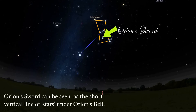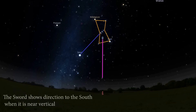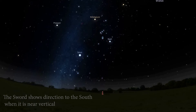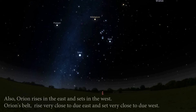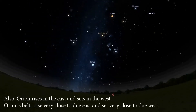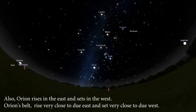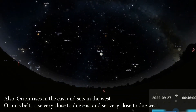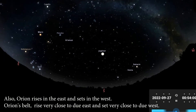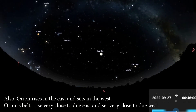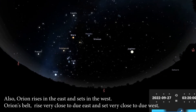Orion's Sword can be seen as the short vertical line of stars under Orion's Belt. The Sword shows direction to the south when it is near vertical. Orion rises in the east and sets in the west, and Orion's Belt rises very close to due east and sets very close to due west.